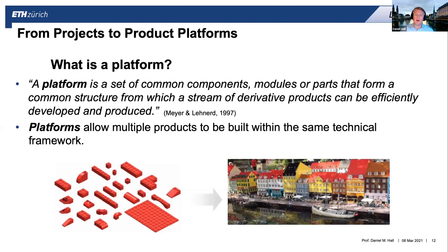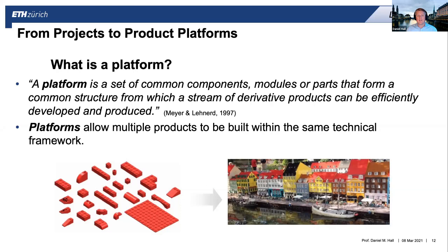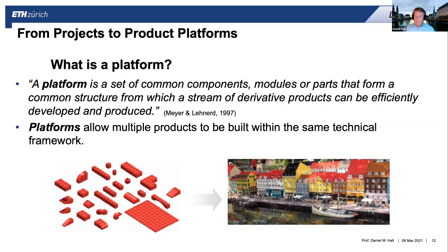The higher-level point about product platforms is that with industrialized construction, we are moving from a project paradigm to a product platform paradigm. A platform is a set of components — modules or parts that form a common structure from which a stream of derivative products can be effectively developed and produced. The easier definition is: it's Legos. You create a kit or product architecture that adheres to specific rules, and those pieces can be configured and put together in different ways following an established pattern, allowing you to build multiple products from the same technical framework.